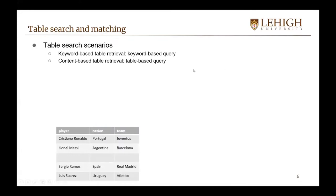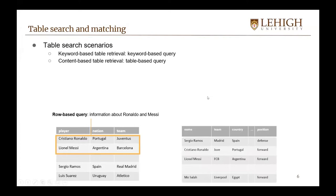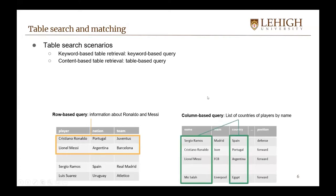Given an input table, we have two scenarios. The first is a row-based query — for example, a query about Ronaldo and Messi matches primarily the first two rows of the table. The second scenario is a column-based query — for example, a query for a list of countries of players by name matches primarily two columns from the given table.